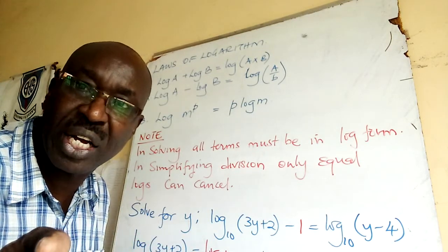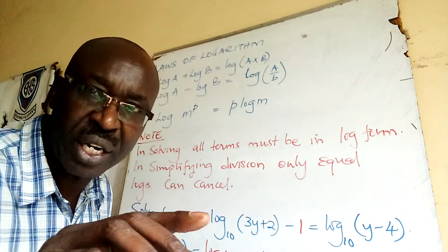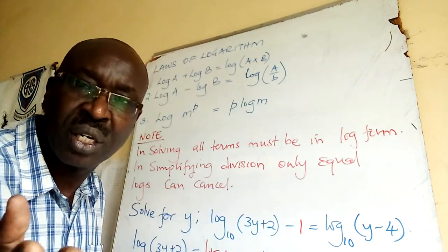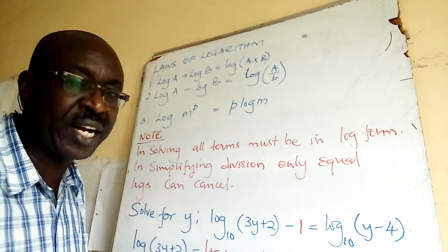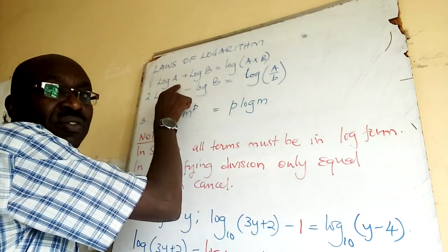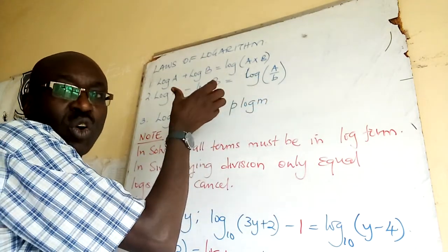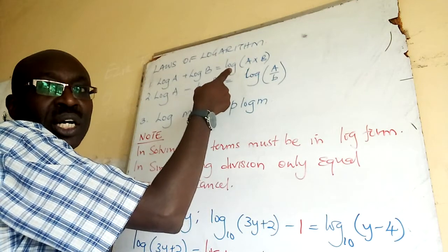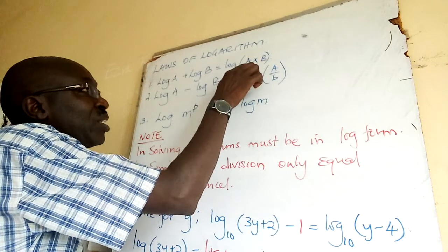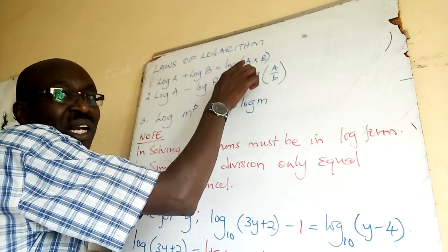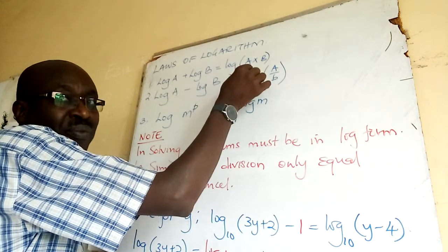And logarithmic expressions - expressions don't have an equal sign, but equations must have two sides, left and right. When you have log a plus log b, you can combine them using multiplication of numbers. Remember, the numbers a and b can be multiplied.